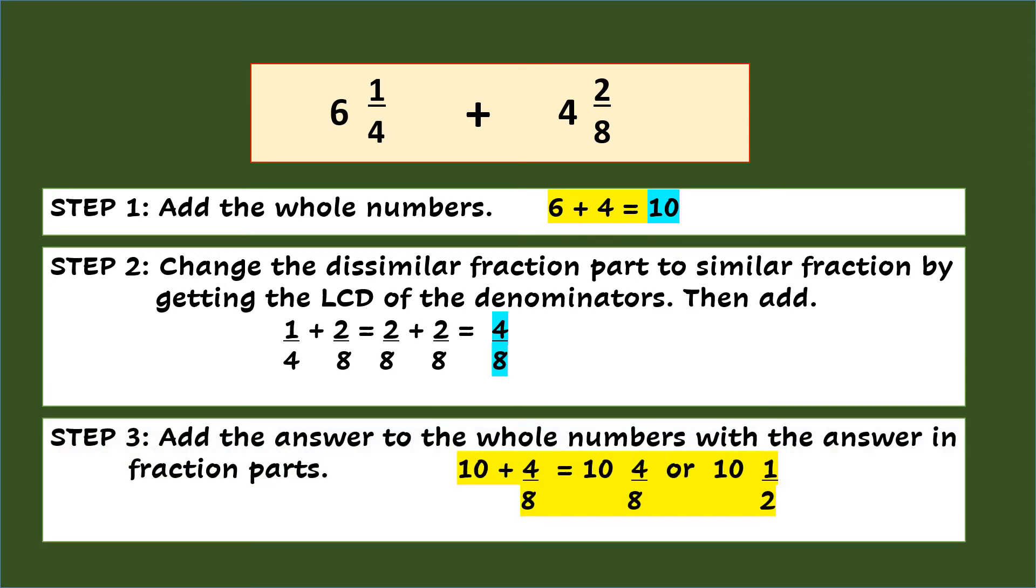Step 3, add the answer to the whole numbers with the answer in fraction parts. So you will have 10 plus 4 eighths equals 10 and 4 eighths, or simplifying it is 10 and 1 half.